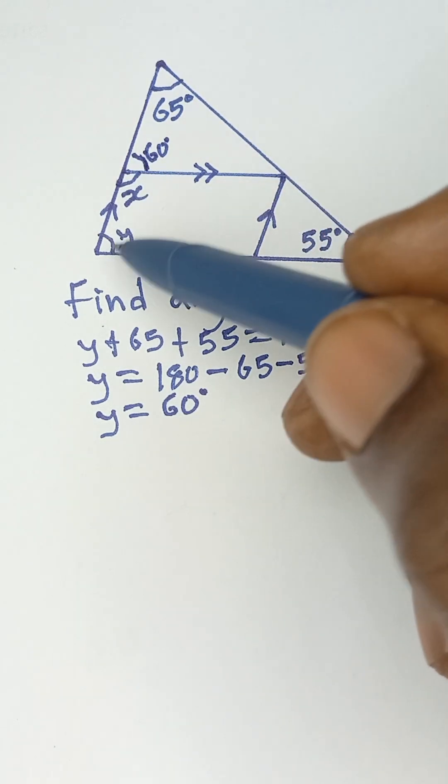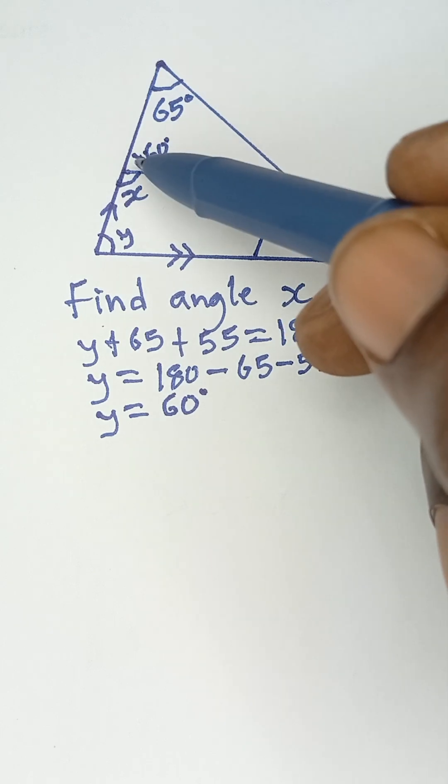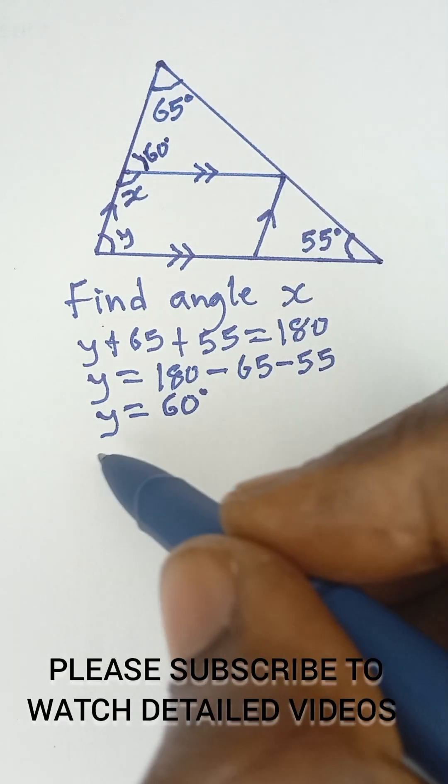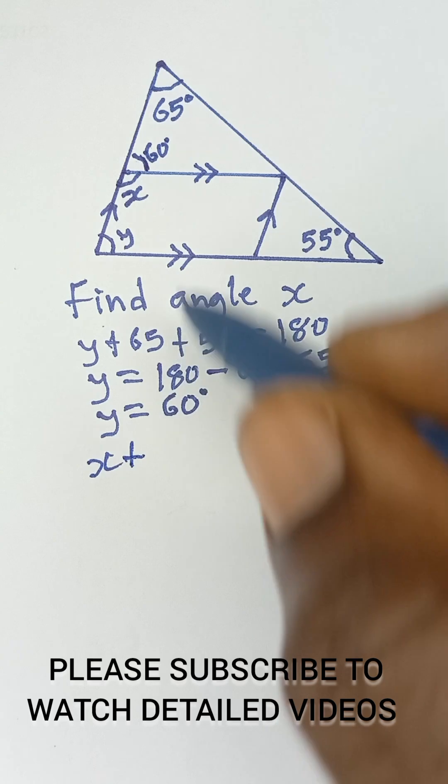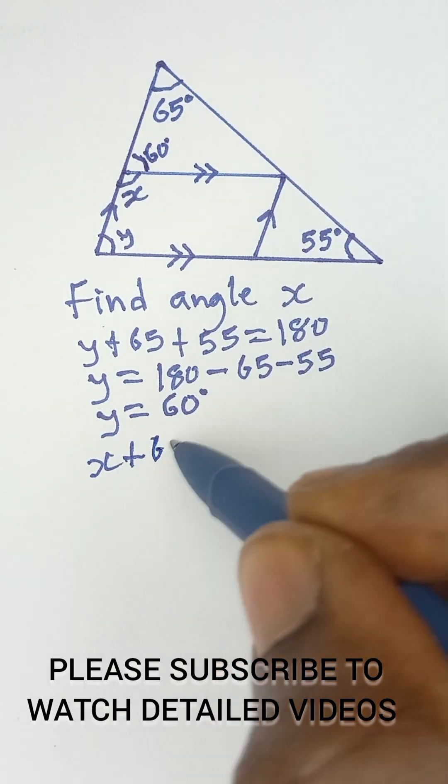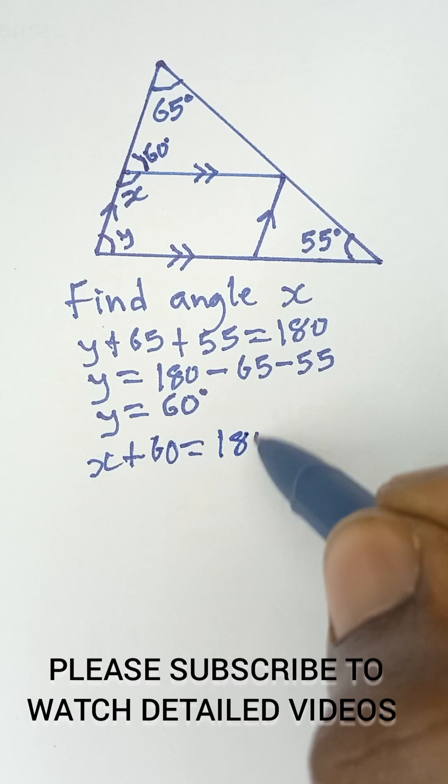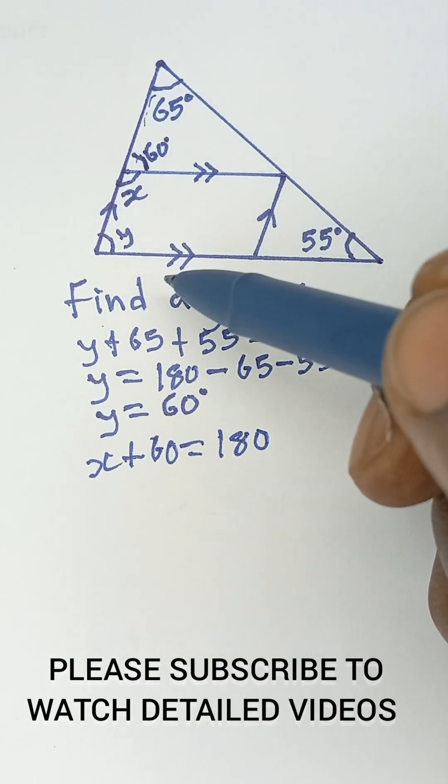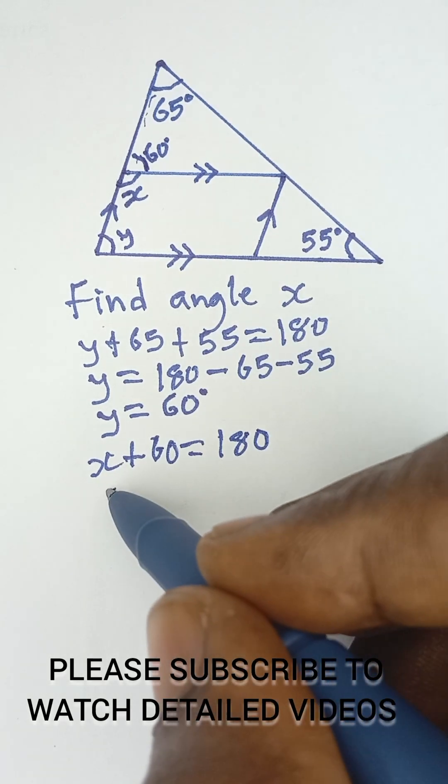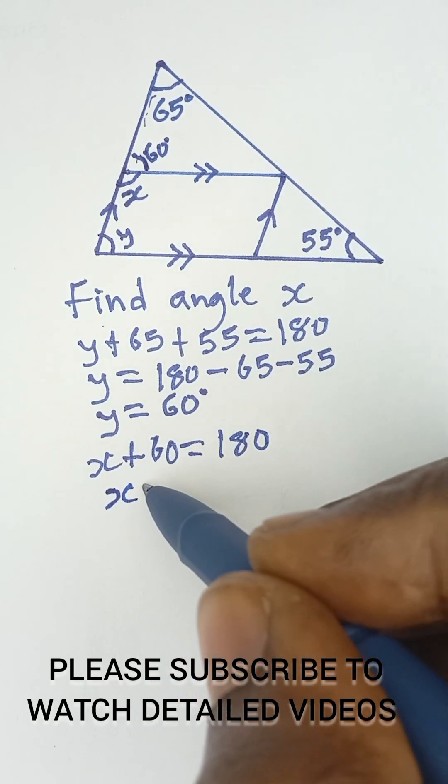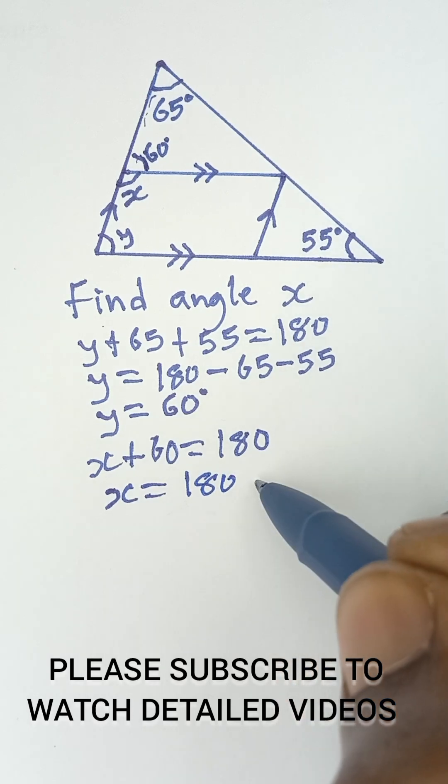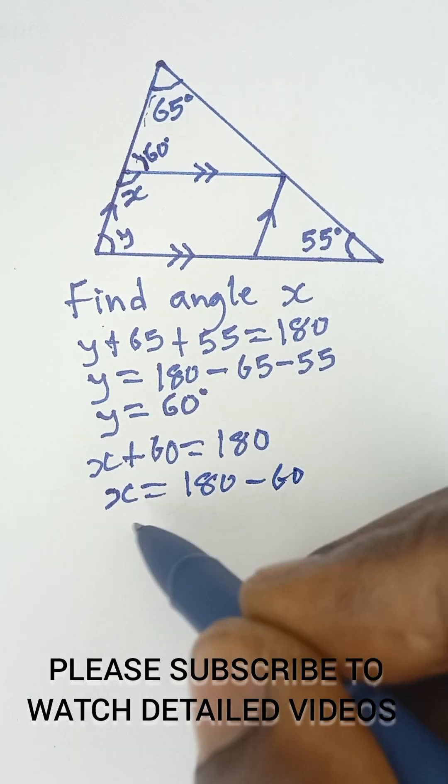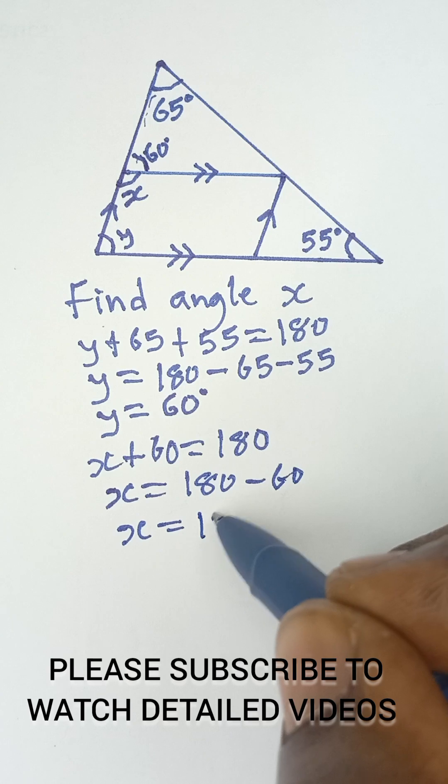So if this is y, this will also be y, which is 60 degrees. And then x plus this 60, they are on a straight line, and the sum of angles on a straight line is 180. So that means x plus this 60 should be equal to 180. So simply we can now obtain x as 180 minus 60 degrees, and that will give us x is equal to 120 degrees as the final answer.